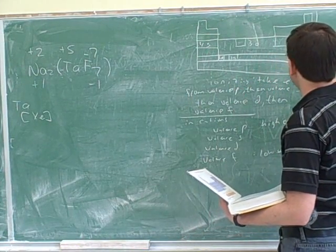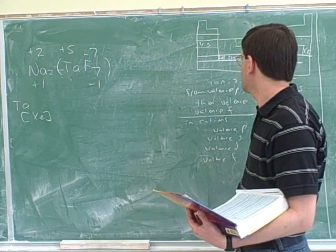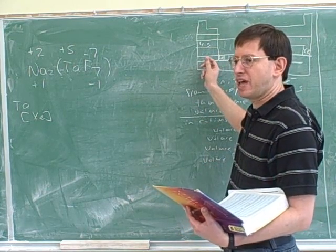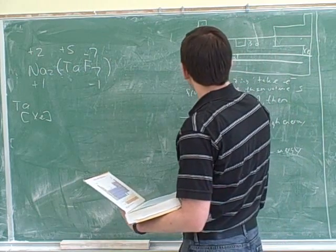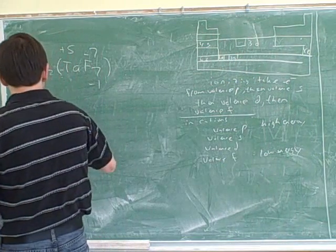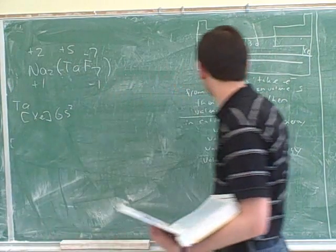This, I guess, is xenon. Okay, so if we were doing the neutral species using the Aufbau principle based on the periodic table, this, I guess, would be the 6s. So I would put two electrons there.